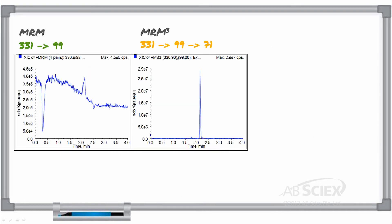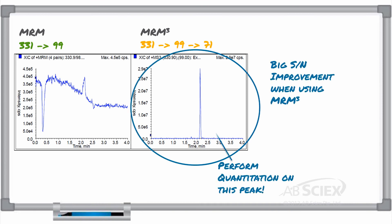The resulting data from this method produced a chromatogram with improved signal-to-noise and reduced background interferences. Additionally, you can use your MRM cubed peaks to perform quantitation just as you would when using MRM peaks. As you can see by this example, MRM cubed is a great way to improve selectivity to remove matrix or background interferences that might affect your MRM peak.